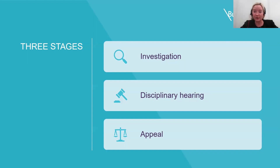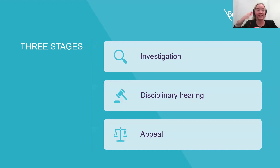The third and usually final stage is the appeal process. If an employee appeals the decision, they should be asked to set out the grounds of appeal in writing, and the appeal chair should then consider those grounds. There is nearly always an appeal hearing, and the main thing for the appeal chair to consider is whether the disciplinary process as a whole was fair. The decision of the appeal chair is usually final, with no further steps in the procedure, although some employers do have a second layer of appeal.